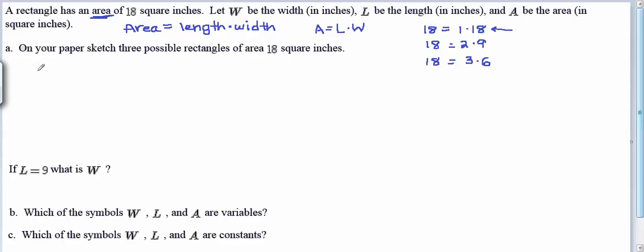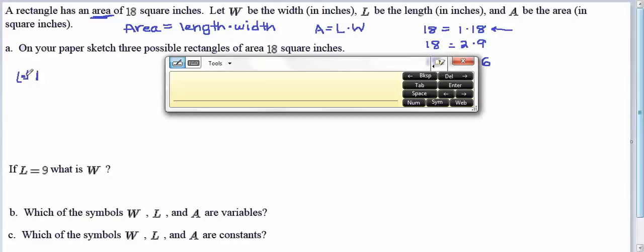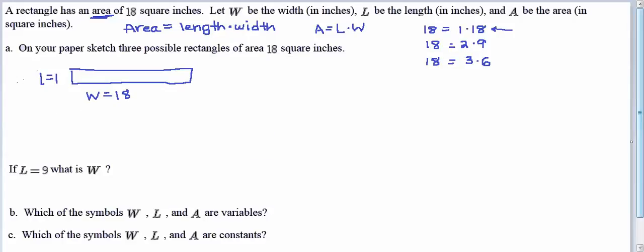So the first rectangle, I might imagine, could have a width of just 1. We could say L equals 1. So here could be a first rectangle with the length equal to 1 and the width equal to 18.